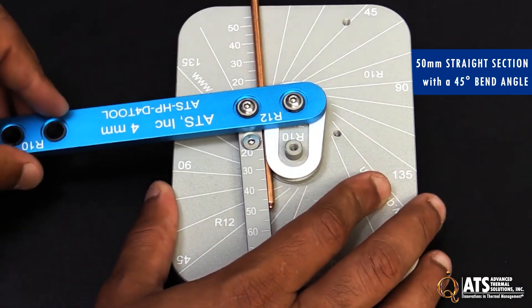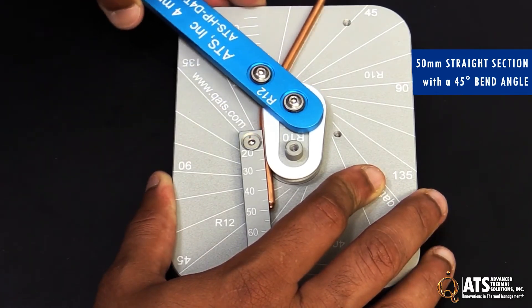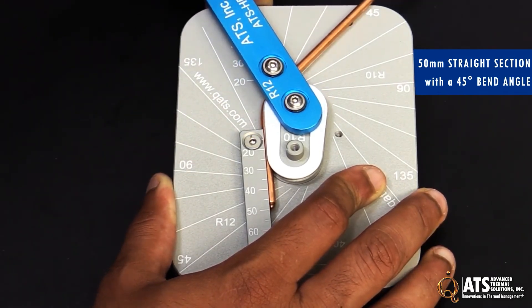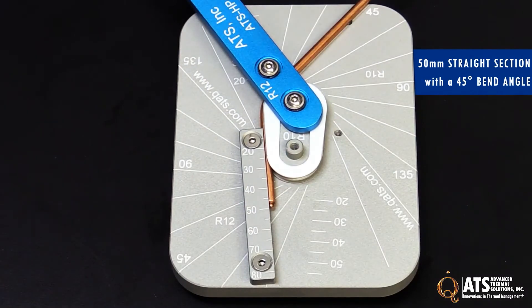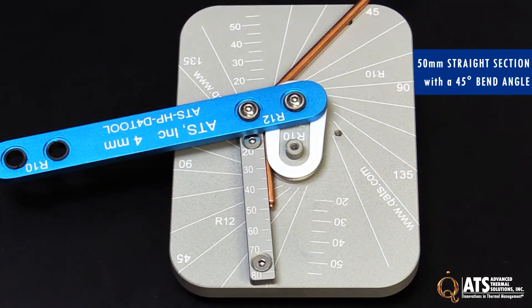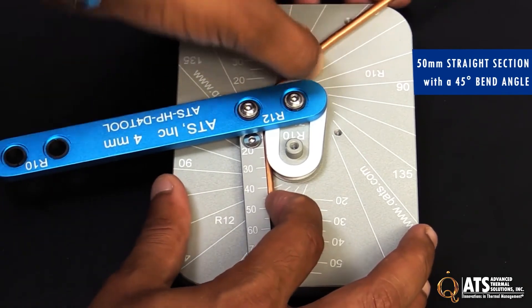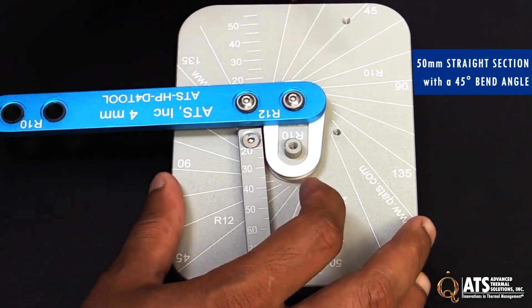Then I rotate the handle until the heat pipe bends to 45 degrees. Then I bend the handle back and remove the heat pipe.